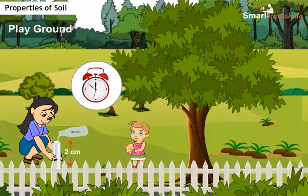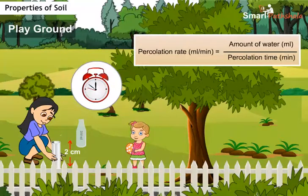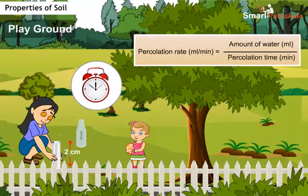Repeat the same at the playground where you select the soil, noting the time accordingly. Calculate the rate of percolation using the formula displayed on the screen for all three soil samples. Then arrange the soil samples in increasing order of the rate of percolation.